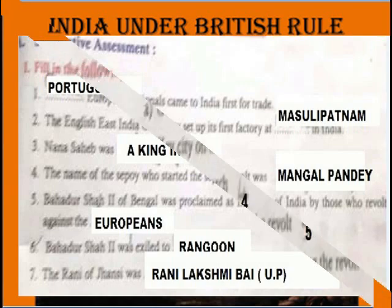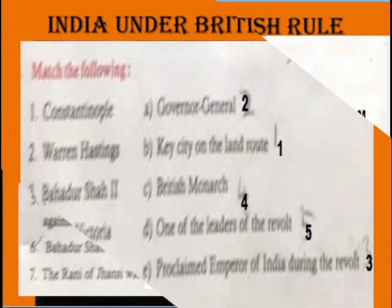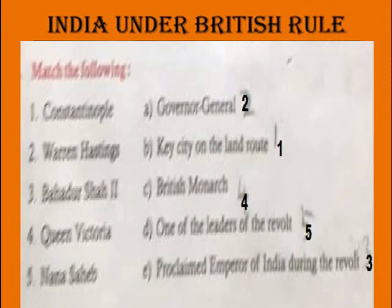Match the following: Constantinople — Key City on the Land Route. Warren Hastings — Governor General.